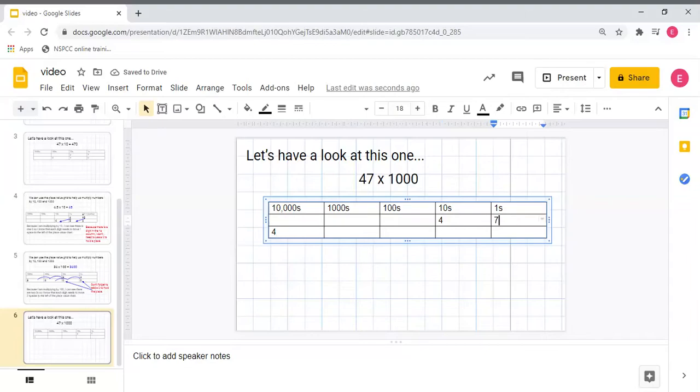I'm going to take my seven ones next and I'm going to jump it three places to the left: into the tens, into the hundreds, into the thousands. So to make sure that each of these places have a digit in them, I need to put the placeholder of zero.